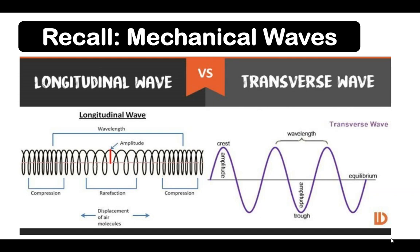In a slinky, the compressed part is called compression, while the part that is spread out or loose is called rarefaction, followed by another compression. From one compression to another compression is a wavelength. And if you draw a center line through the wave, the distance from that line to the wave is the amplitude.